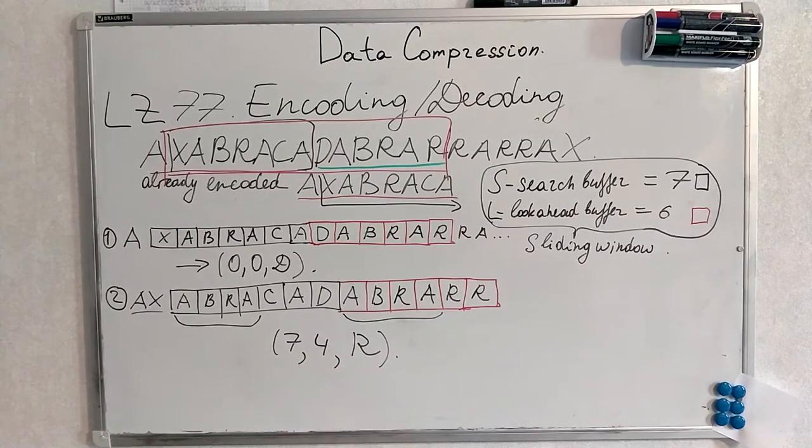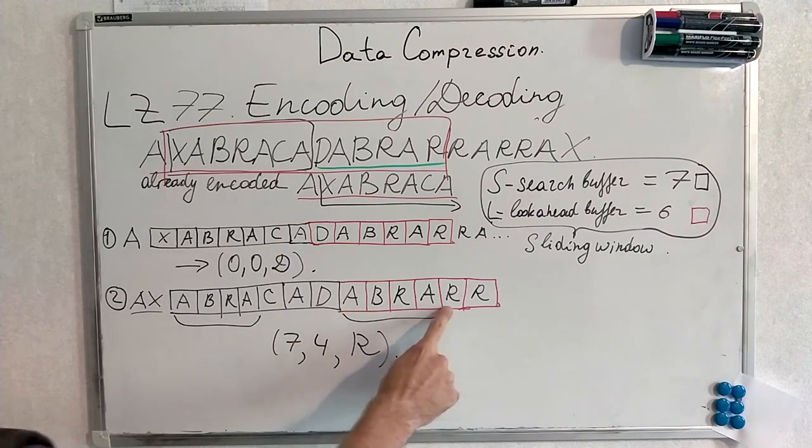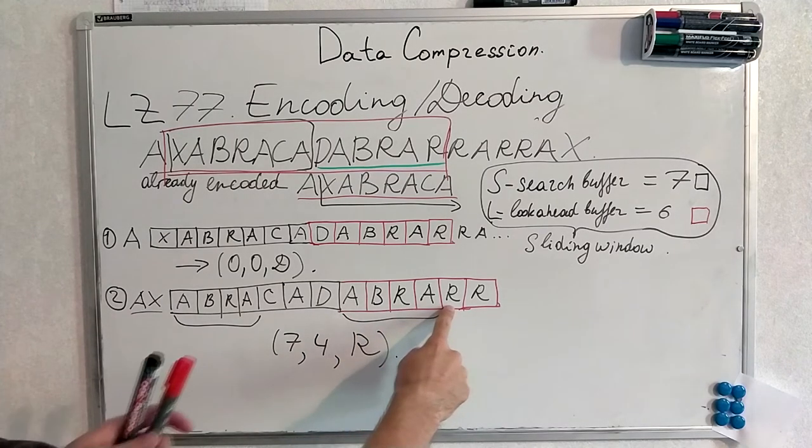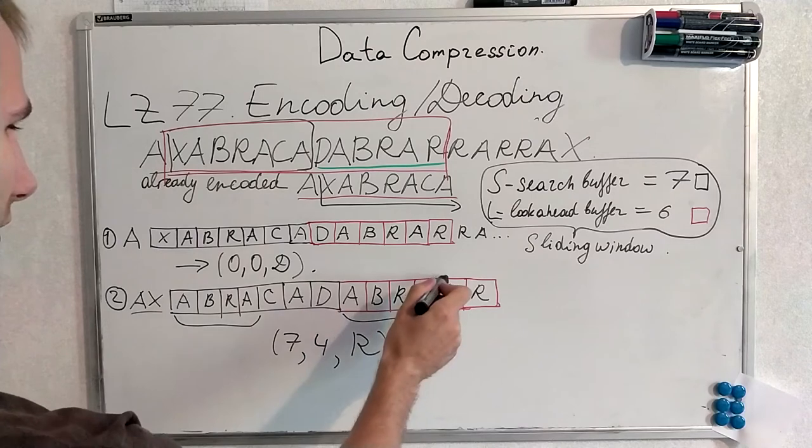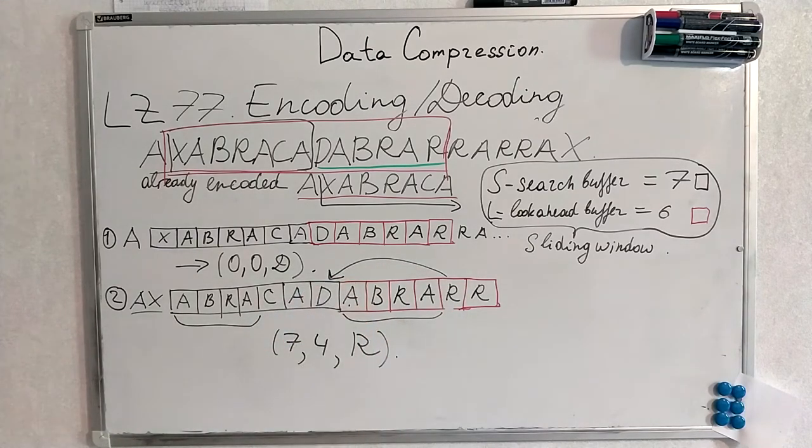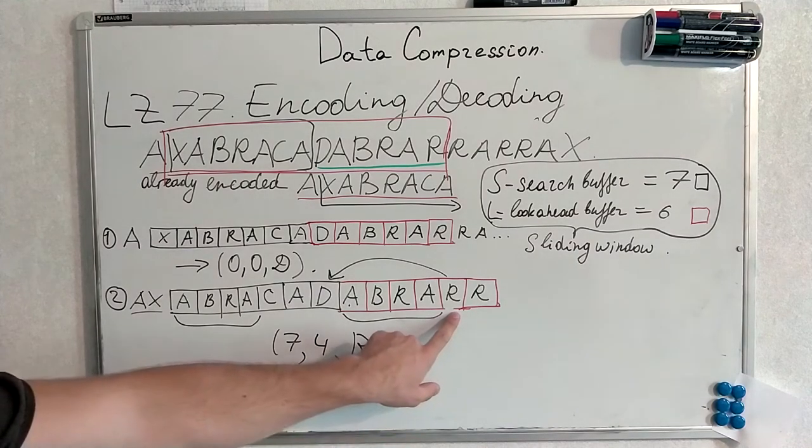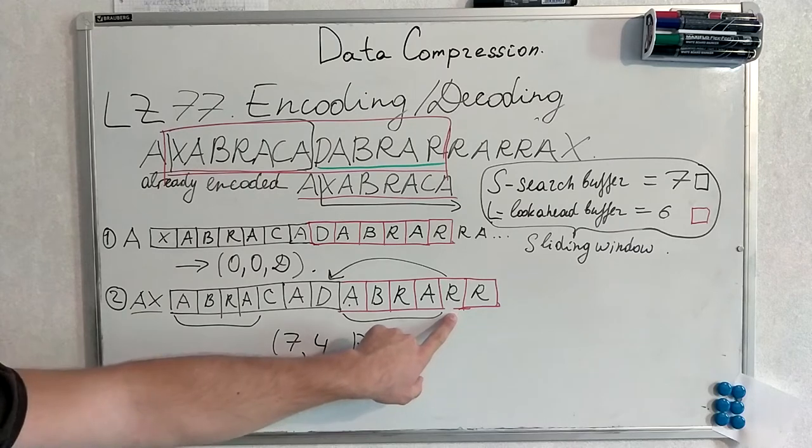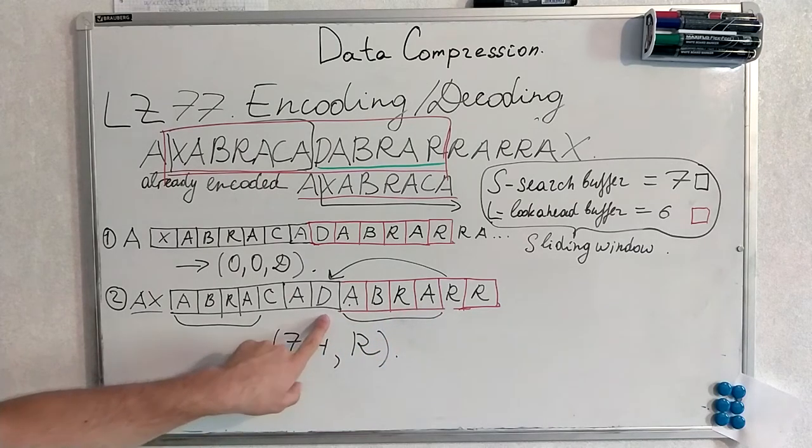Important thing here. When we have encoded this Abra, R is next unmatched symbol. Thus it will be carried here. Not here, but here. I made a lot of mistakes because of that. But I am showing you that R from here, it is the last unmatched symbol. It will become last here.